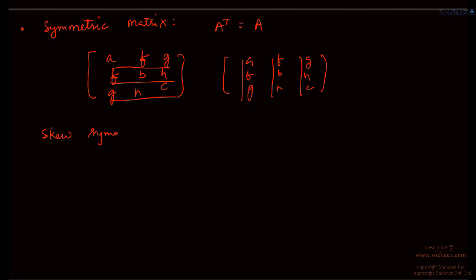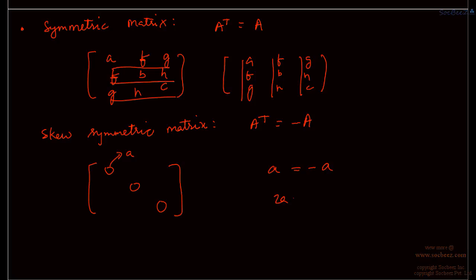Just opposite of this is a skew-symmetric matrix, where A transpose equals minus A. If you write down skew-symmetric matrices, you will see that the most important property is that the principal diagonal elements must all be 0 — because the diagonal elements do not change position when transposed, so A must equal minus A, giving 2A equals 0, hence A equals 0.